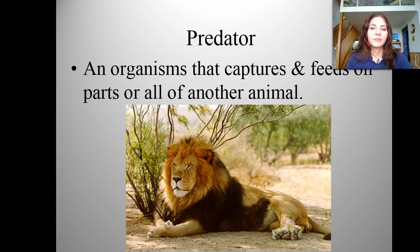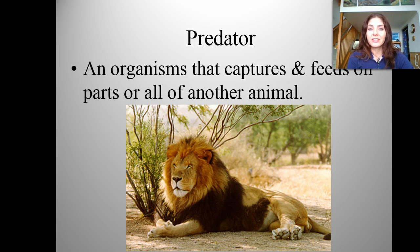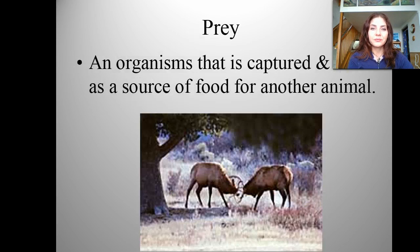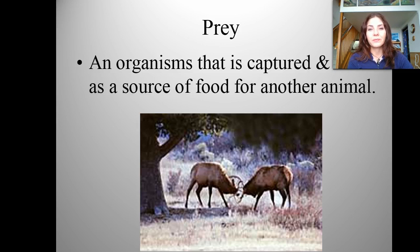Next is a predator. Predators are organisms that capture and feed on parts or all of another organism. Common predators you hear about are sharks, tigers, lions, killer whales, wolves — those are all top predators. The prey is what they're consuming — this is an organism that is captured and serves as the food source for another animal.